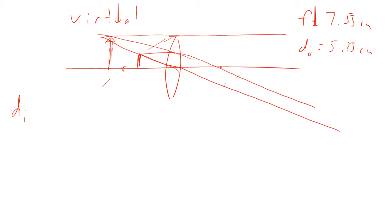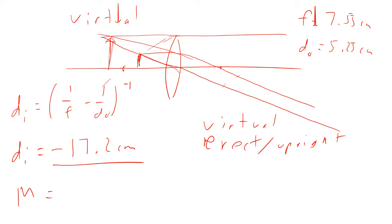So we have a virtual image. Now again, Di equals 1 over F minus 1 over Do to the minus 1, so if we plug in the mathematics it comes out to be minus 17.2 centimeters. The negative distance means it's on the wrong side, so that means that it is in fact a virtual image. We got that from the diagram anyway, so this is a virtual image. It's erect, so it's upright. Magnifications minus Di over Do, that comes out to be 3.28 times, so that means it's enlarged. Again, positive number there means it's upright.